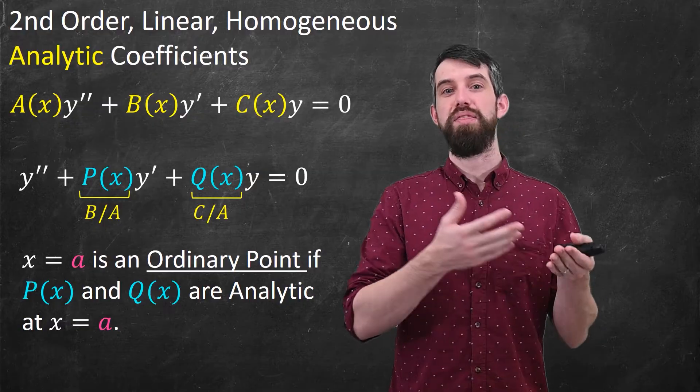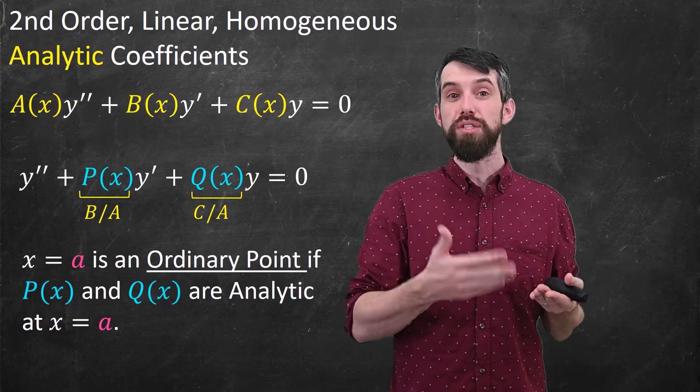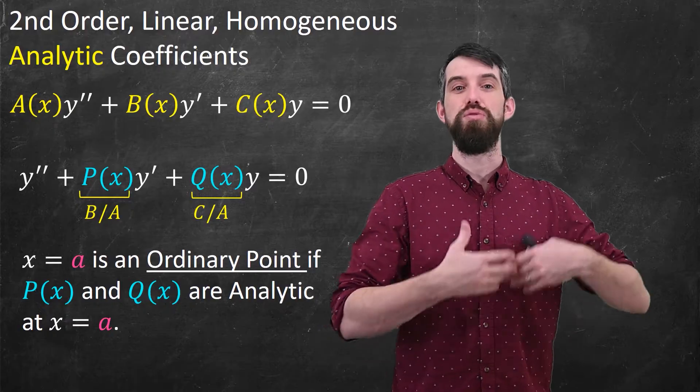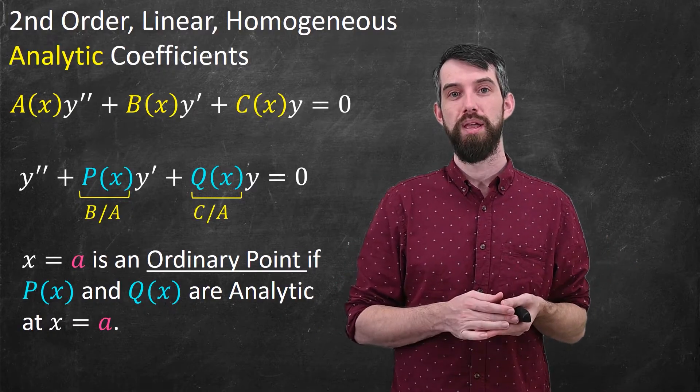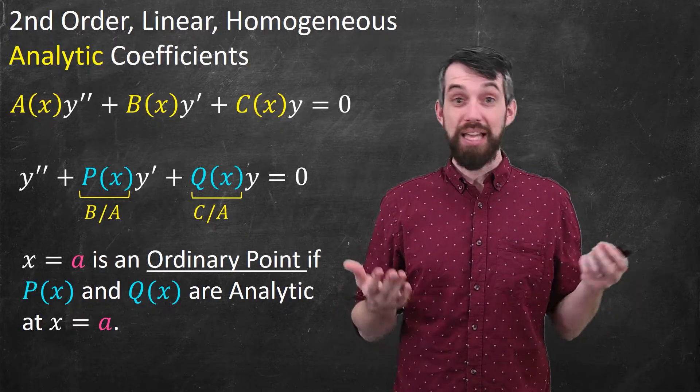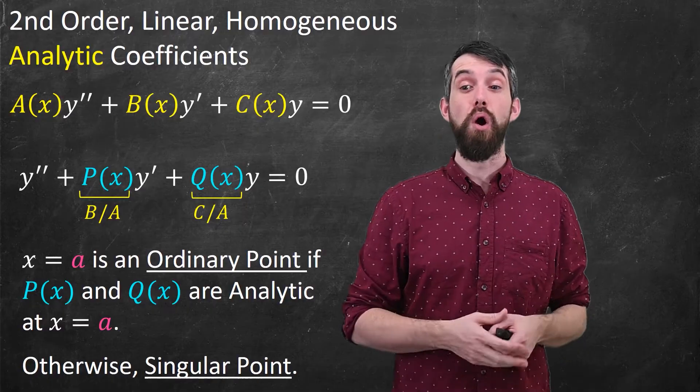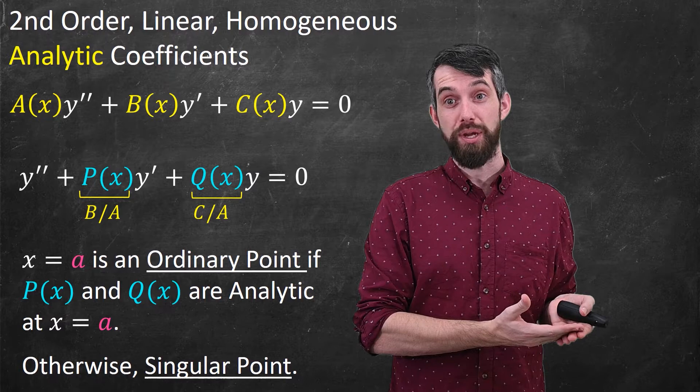Perhaps the most common way that this would fail is if there is a zero of A of x that is not a zero of B of x or C of x, so that when you divide through, you get an infinite discontinuity at that particular point. So that is ordinary points. And when that is the case, i.e. it is not ordinary, then we're going to call it a singular point. So if you have divisions by zero that don't cancel out, you have singular points.